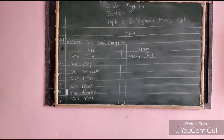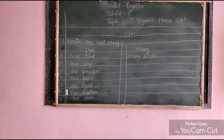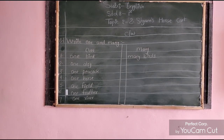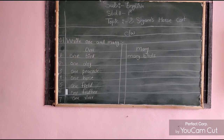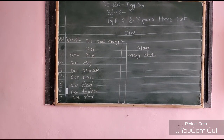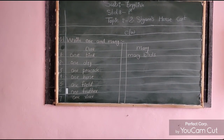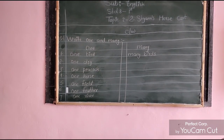I will solve one for you. Look at number one — B-I-R-D, Bird. On the right hand side I wrote 'many' — M-A-N-Y — and then I wrote 'birds', meaning I made the plural of the word 'bird'. Like that only, you have to write the rest.